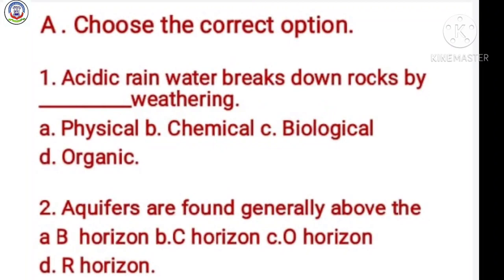Exercises. Question number A: Choose the correct option. Number 1: Acidic green water brings down rocks by dash weathering. Option A is physical, B chemical, C biological, D organic. Answer is B, chemical.